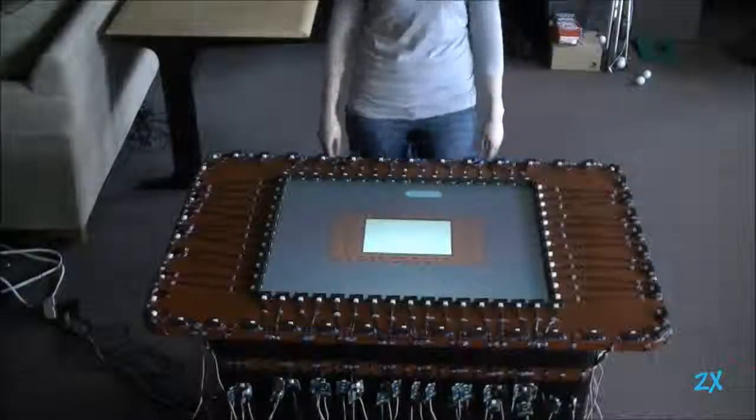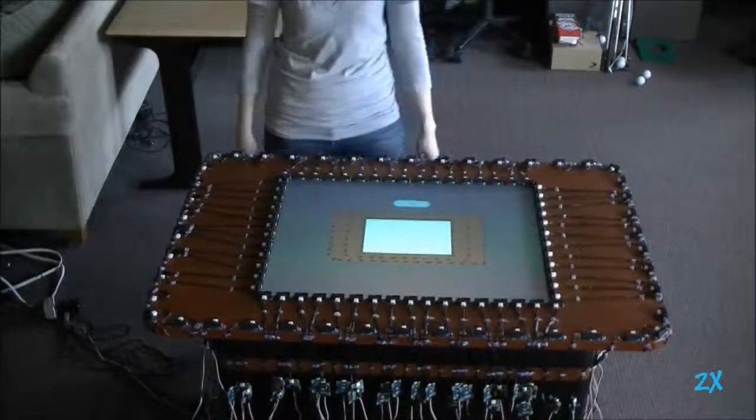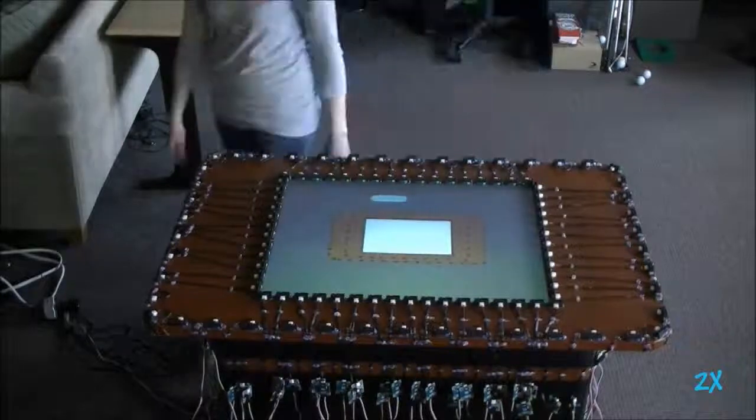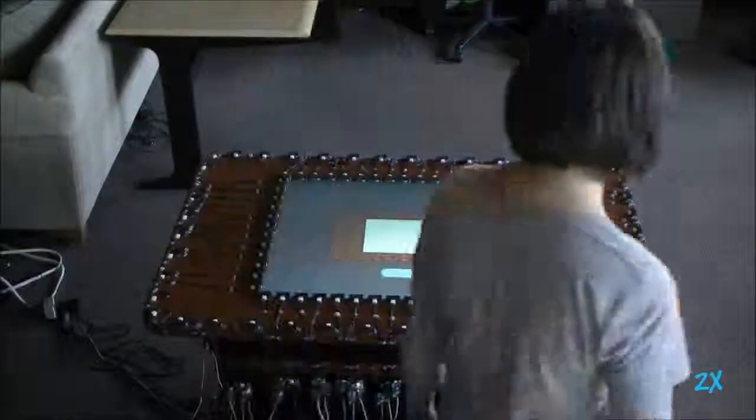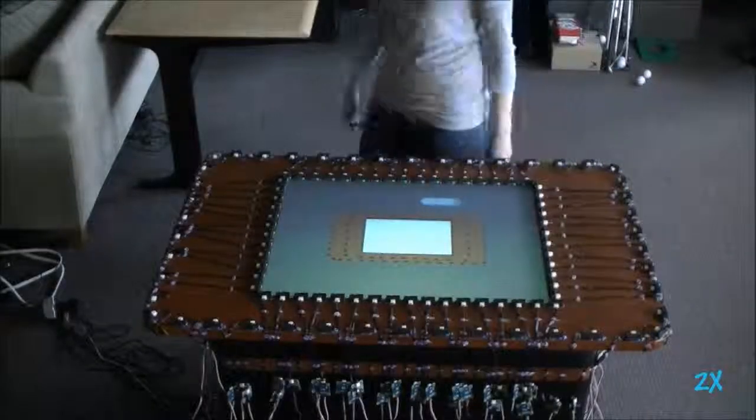As the user approaches the display, their body is detected and its approximate location is determined by the outward-facing sensors. The user's location and distance from the tabletop is continually monitored as the user walks around the surface.